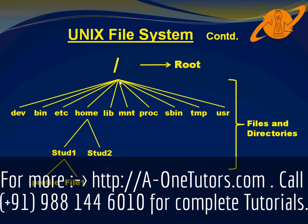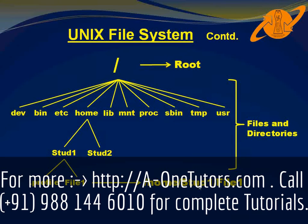To access a particular file, you start from the entry point called root and traverse the whole tree to reach that file. For example, to access file1, you traverse from root to home, from home to std1, and from std1 to file1. This can be represented as the path: /home/std1/file1. So using the Unix file system you can read, write, and do operations on various files.